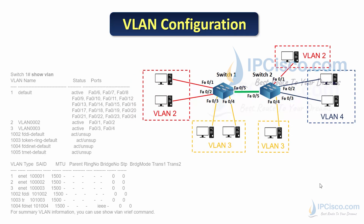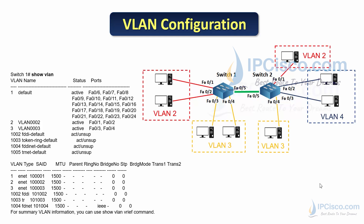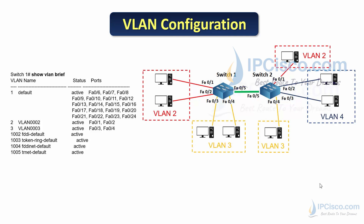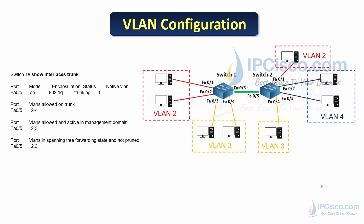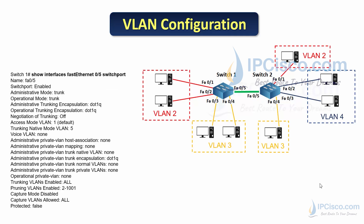Looking at the show command outputs on Switch 1: the configured VLANs are visible, along with the default VLANs. Note that FastEthernet 0/5 is not shown because it has been configured as a trunk port — trunk ports are not visible with 'show vlan' on a Cisco switch. The 'show vlan brief' command shows VLAN information briefly. The 'show interfaces trunk' command shows the trunk port, its mode, the encapsulation protocol, and other important VLAN information.